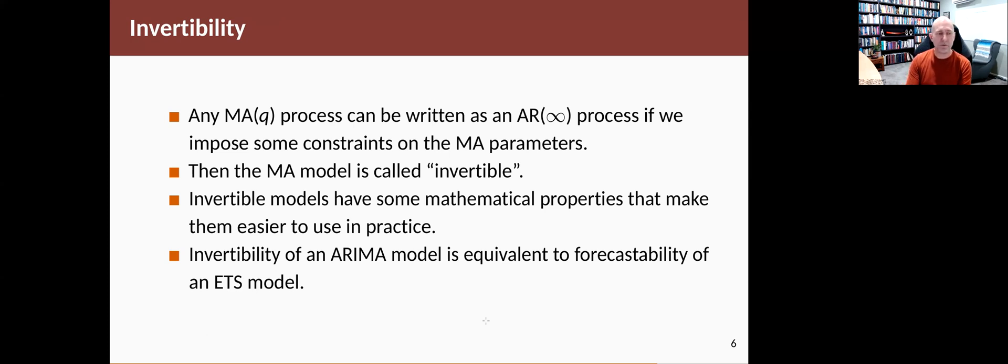And those constraints are called the invertibility constraints. So you say the model is invertible if you can take the MA(Q) model and write it as an AR(infinity) model. They also have some other mathematical properties that make them easier to use in practice. You might remember back in the chapter on exponential smoothing, we talked about parameter constraints there and called them forecastability constraints. They turn out to be exactly the same as the invertibility constraints of an ARIMA model.